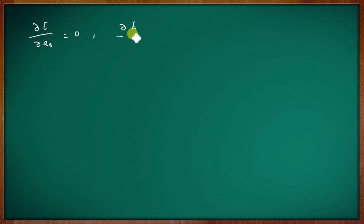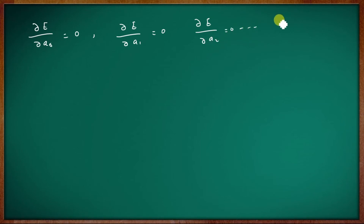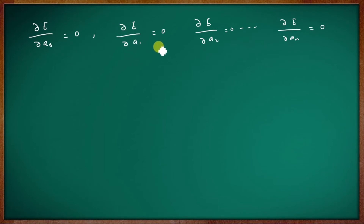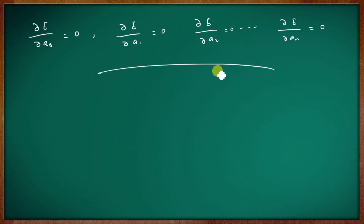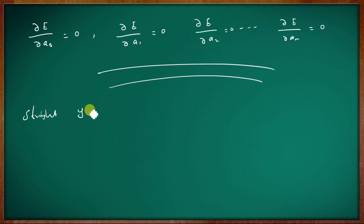Setting these partial derivatives to zero gives the normal equations. This is the least square method. Let's do an example. Let's take the straight line equation: y equal to mx plus c. This is a straight line equation, where m and c are the parameters.